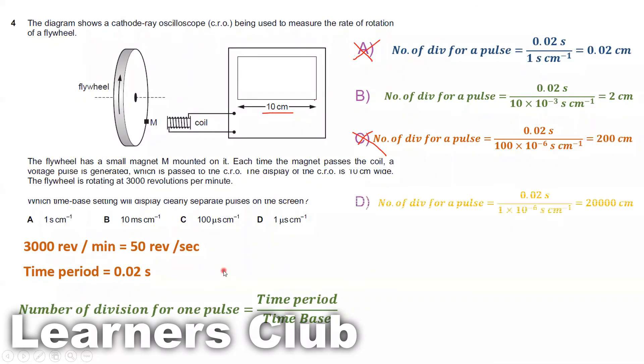Option D: 1 microsecond per centimeter. So 1 into 10 to the power minus 6. Using this formula, you are getting 20,000 centimeter. So for one pulse you need a screen which is 20,000 centimeter long. But we have just 10 centimeters. So D is not the answer.